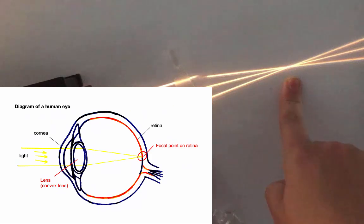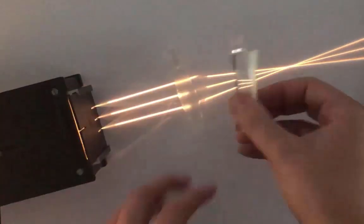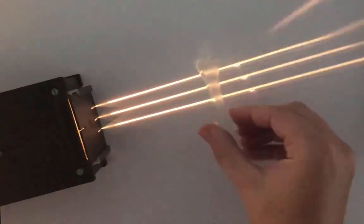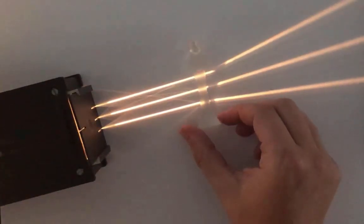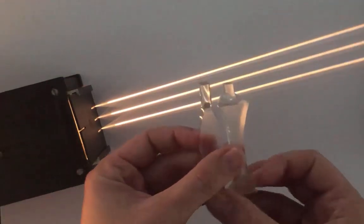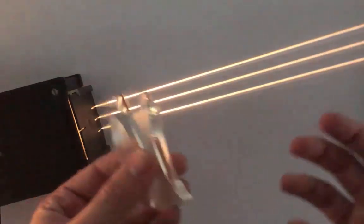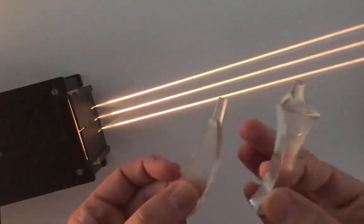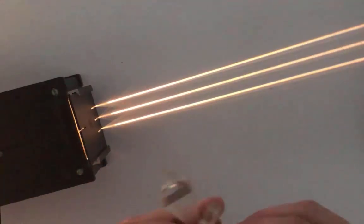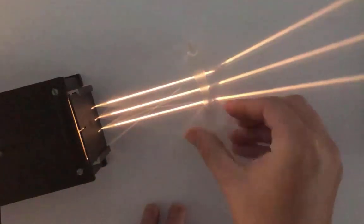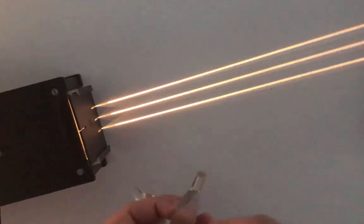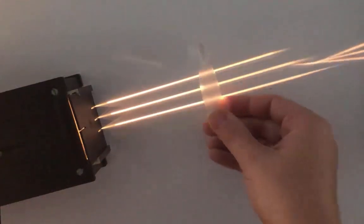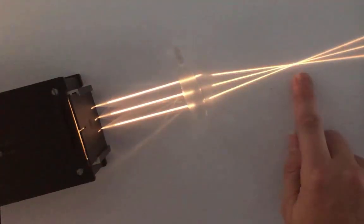We can also relate concave lenses to different issues that we might have with eyesight, and how glasses can help to correct them. So remember: concave disperses outward; convex, like your eye, focuses the light into a focal point.